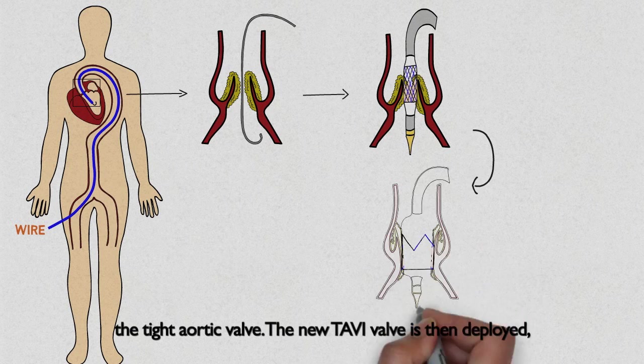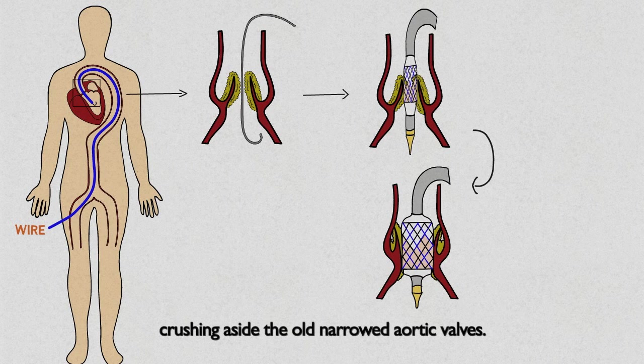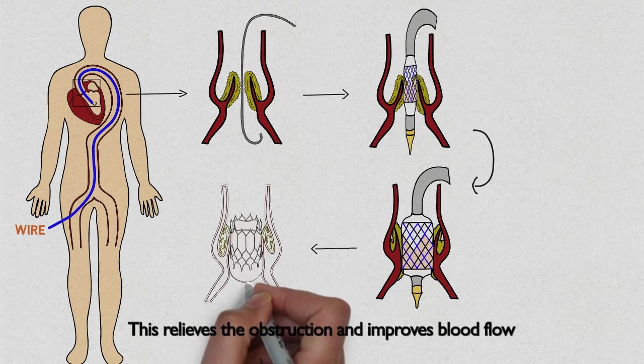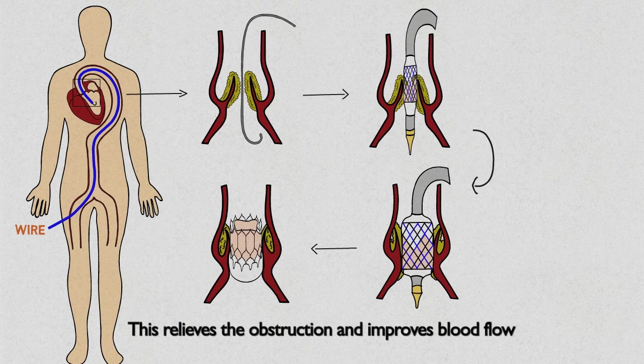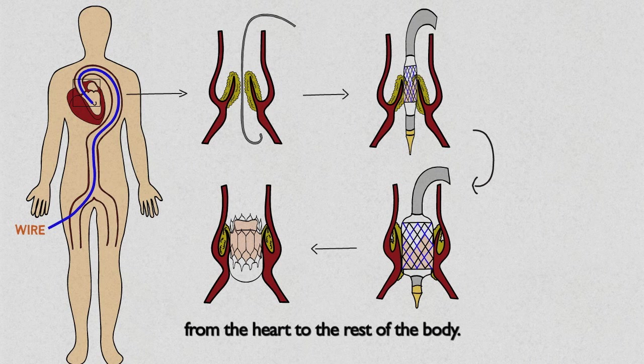The new TAVI valve is then deployed, crushing aside the old narrowed aortic valve. This relieves the obstruction and improves blood flow from the heart to the rest of the body.